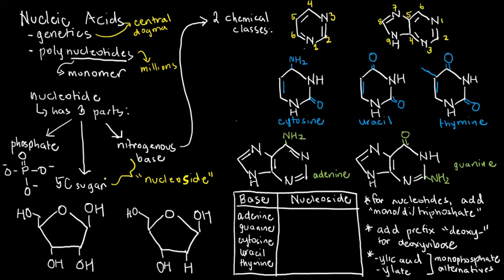The 5-carbon sugar gives us two choices — the furanoses which have 5 carbons. The first one is ribose. The second one is basically just the OH converted to H — we lost an oxygen, so clearly this is called deoxy, meaning loss of oxygen: deoxyribose. This is the basis for the first letter of RNA and DNA.